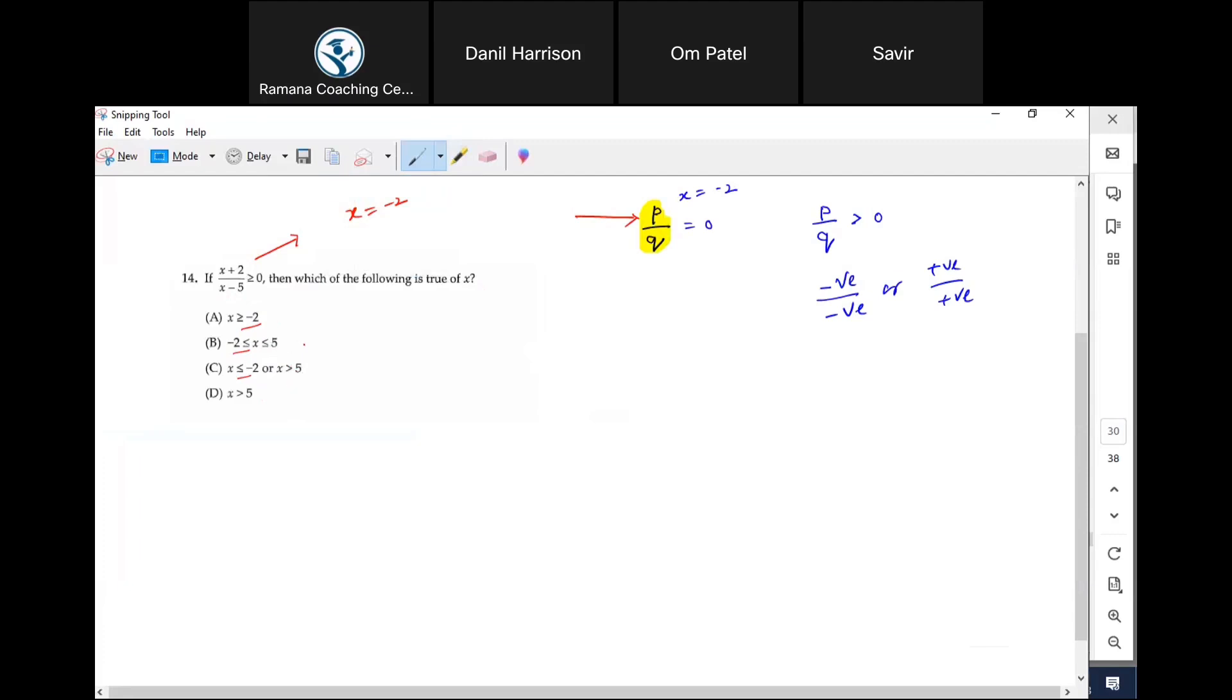See if you can eliminate answer choices. Can an answer be six? If I substitute six, what do I get? Eight over one, right? Isn't that positive? So that means x can be six, so this is wrong.